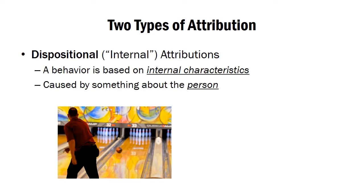A lot of the research has looked at two basic forms of attribution. One of them is a dispositional attribution, sometimes referred to as an internal attribution. This is when you explain a person's behavior as being caused by internal characteristics — something about the person. When you draw a dispositional attribution, you're saying that person did this thing because of some quality of that person.